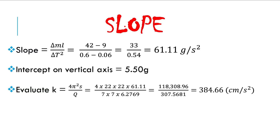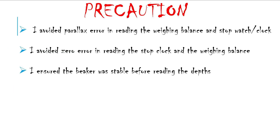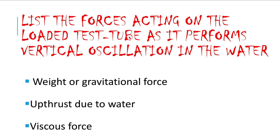The precautions we took during this experiment were: we avoided parallax error in reading the weighing balance and the stop clock; we avoided zero error in reading the stop clock and the weighing balance; and we ensured that the beaker was stable before we measured the depth of immersion.